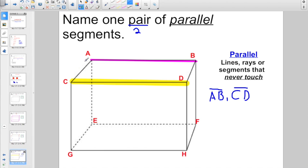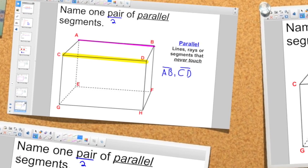Remember, the abbreviation for segment is just a line with no arrows. Segment AB is parallel to segment CD, right? Two capital letters, and the segment abbreviation on top of it. There were lots of them. I could have said segment CA is parallel to segment DB, or segment DB is parallel to segment HF.